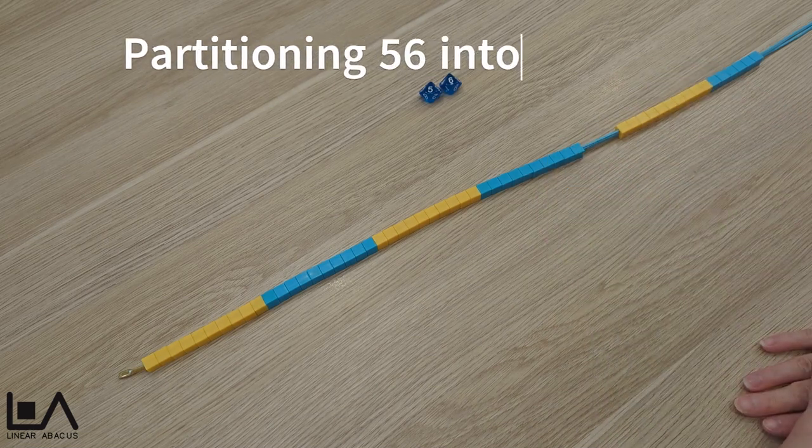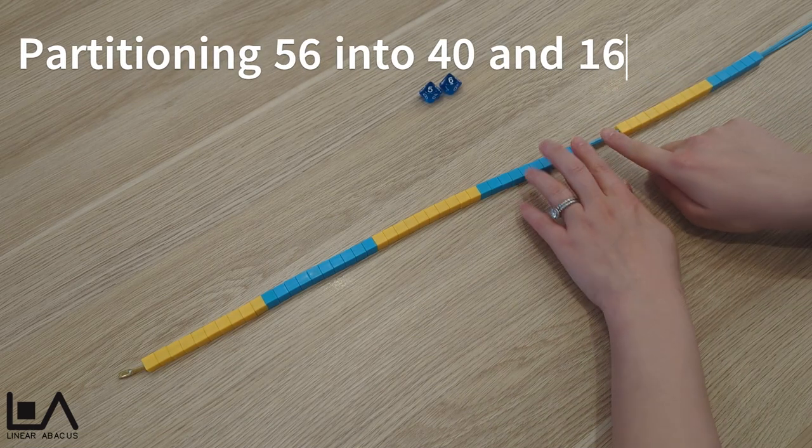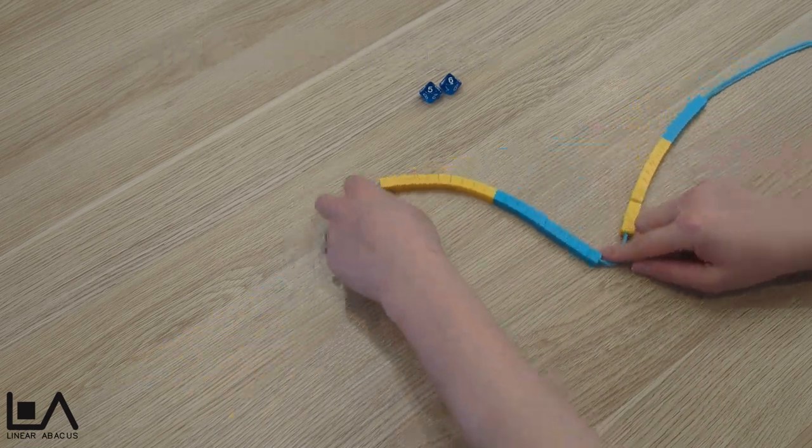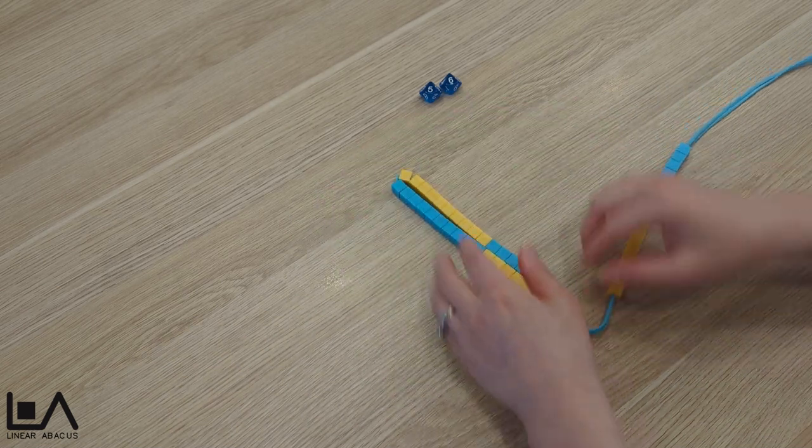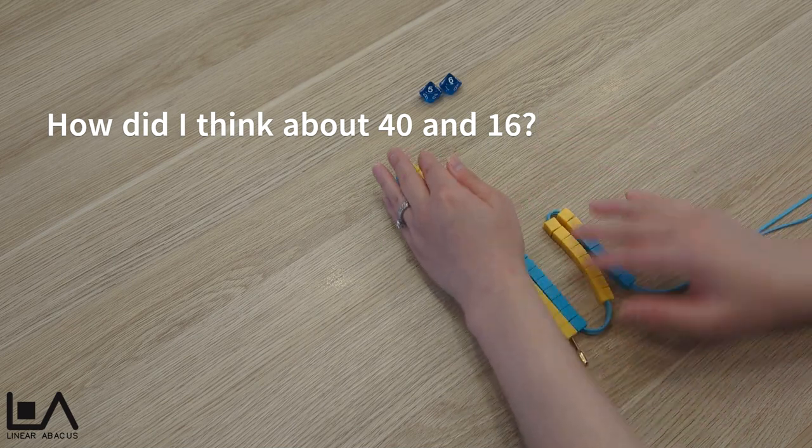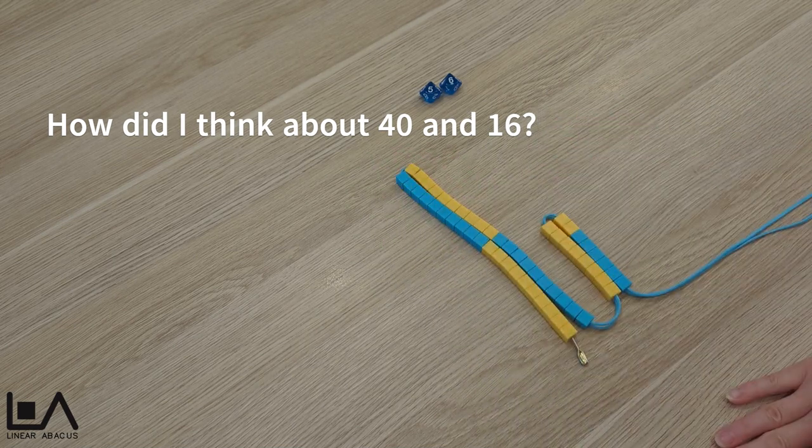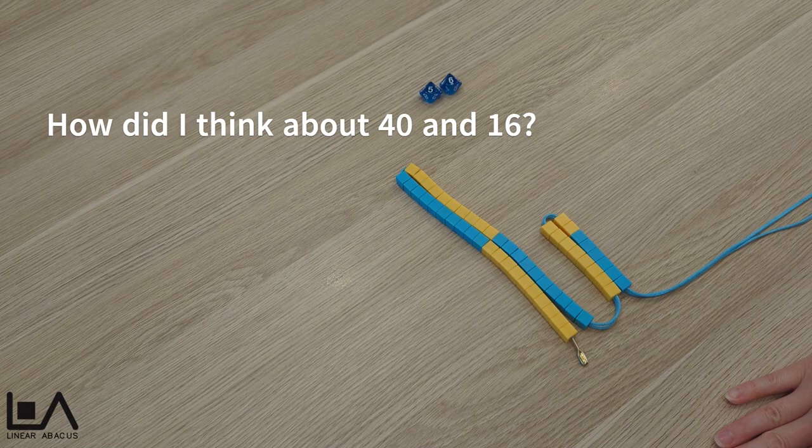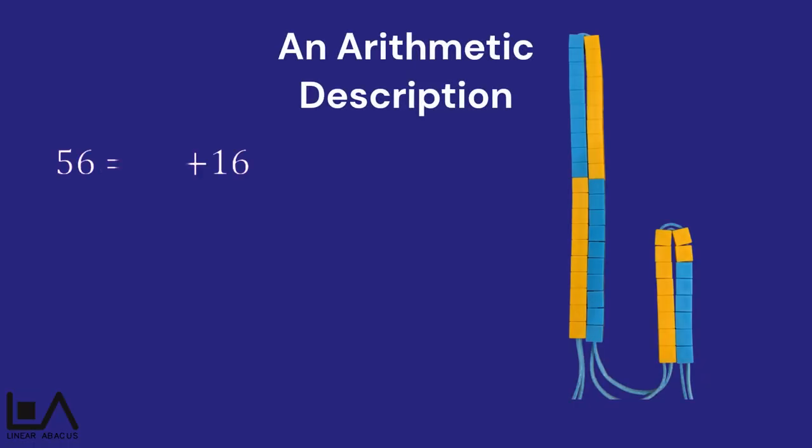This time, I will partition 56 into 40 and 16. Follow along with the video, and discuss with a peer how I thought about 40 and 16. The two arrays show how I thought about the numbers.